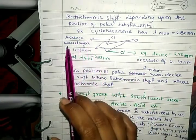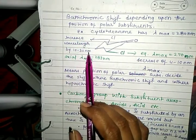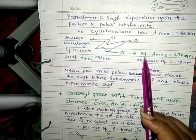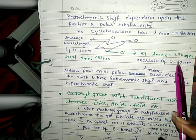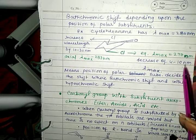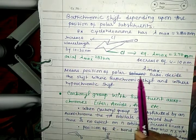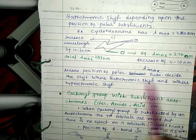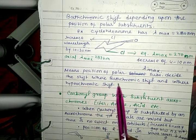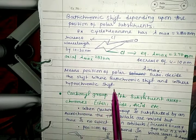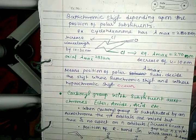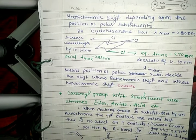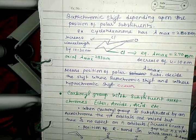At the axial position, wavelength increases by 10 to 30 nanometers, while at the equatorial position, lambda max decreases by 4 to 10 nanometers. This means the position of the polar substituent determines where bathochromic shift and where hypsochromic shift occur.